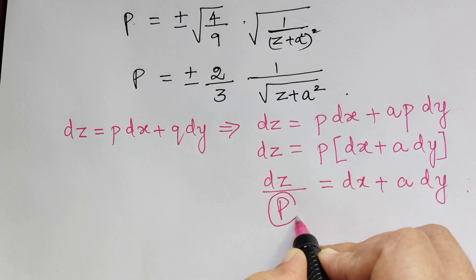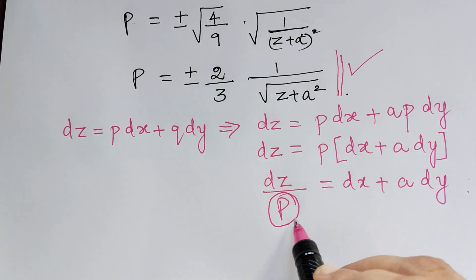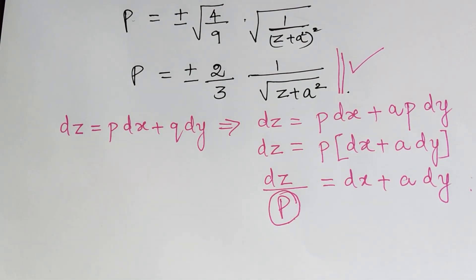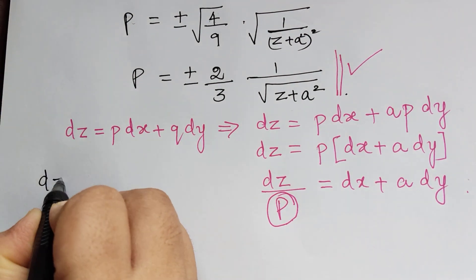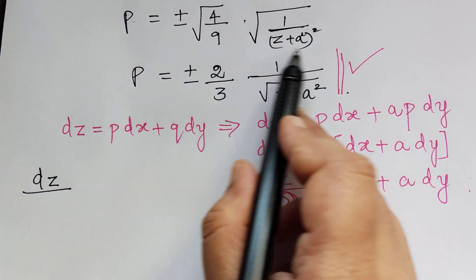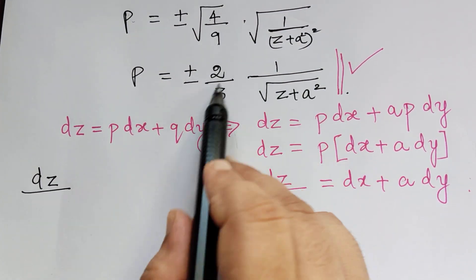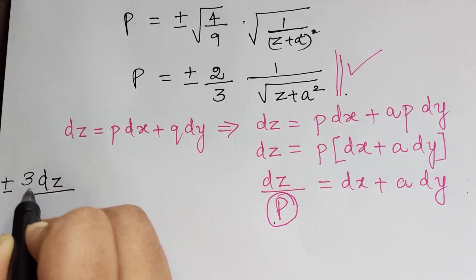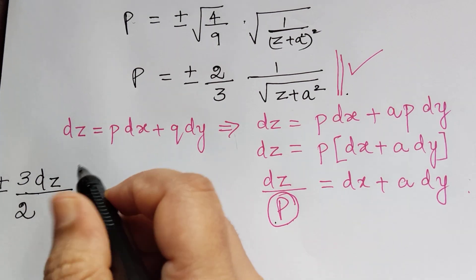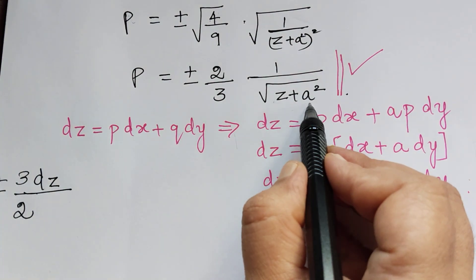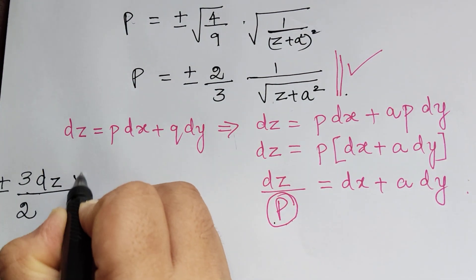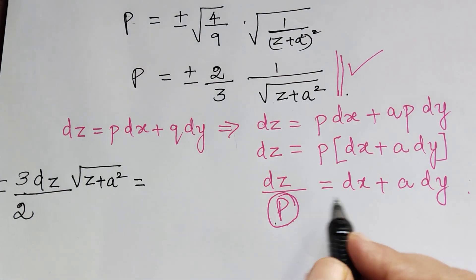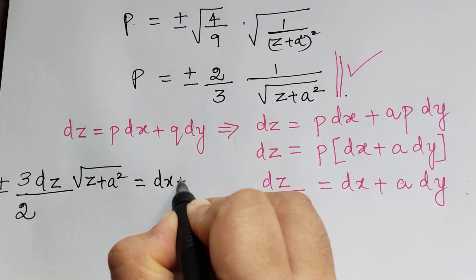Now we substitute the value of p into this equation. dz divided by p means we take the reciprocal of p, which is plus or minus 3 divided by 2, multiplied by the square root of (z plus a squared). So we get: plus or minus (3/2) times the square root of (z plus a squared) equals dx plus a dy.